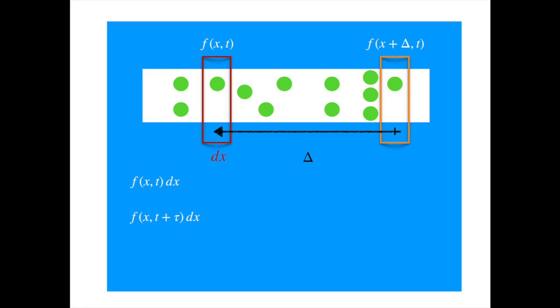Now if we represent the probability of displacement by phi, so phi of delta would mean the probability of a particle experiencing a displacement of delta. Then the number of particles at x plus delta that will move to x, will be the number of particles at x plus delta times the probability of displacement equal to delta. This is because the particles are delta distance away from x, so they need to experience a displacement of delta to end up at x.